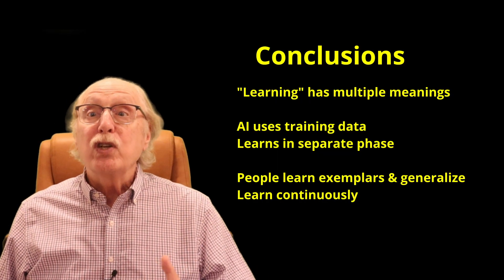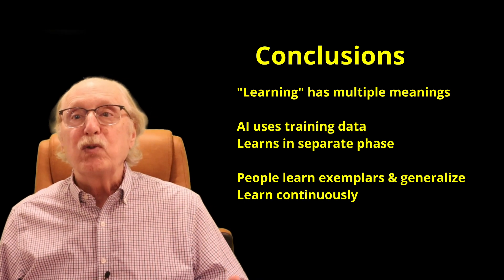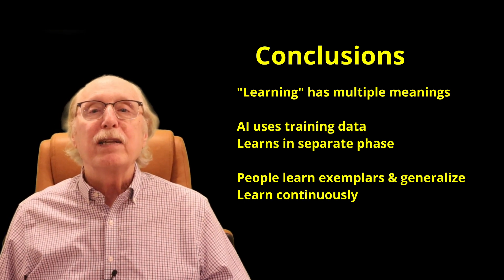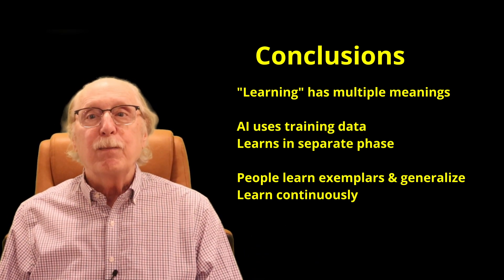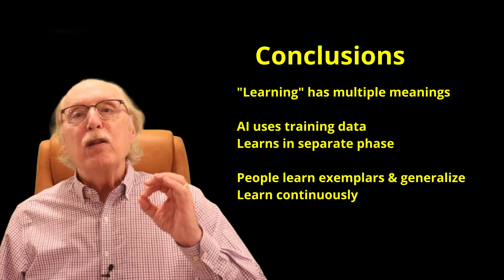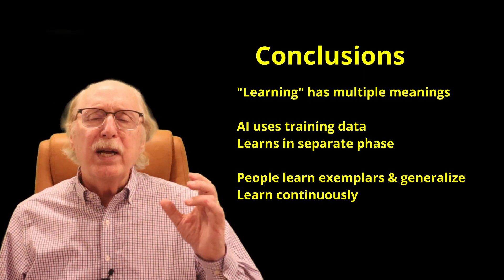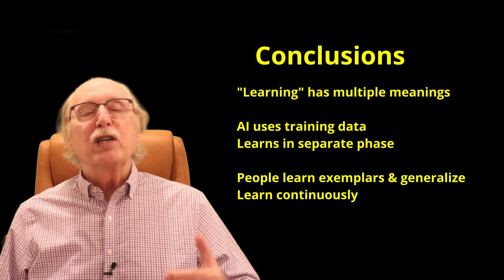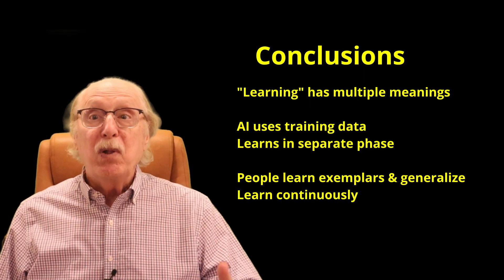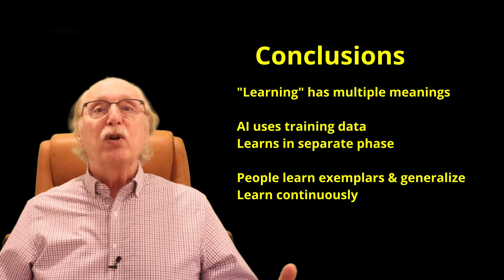Human learning uses a graph structure to store exemplars, build abstractions, handle exceptions, and transfer knowledge across tasks. We learn by observation, by curiosity, by experience, and by being told. We can explain our reasoning, apply common sense, and we do it all on very little energy.